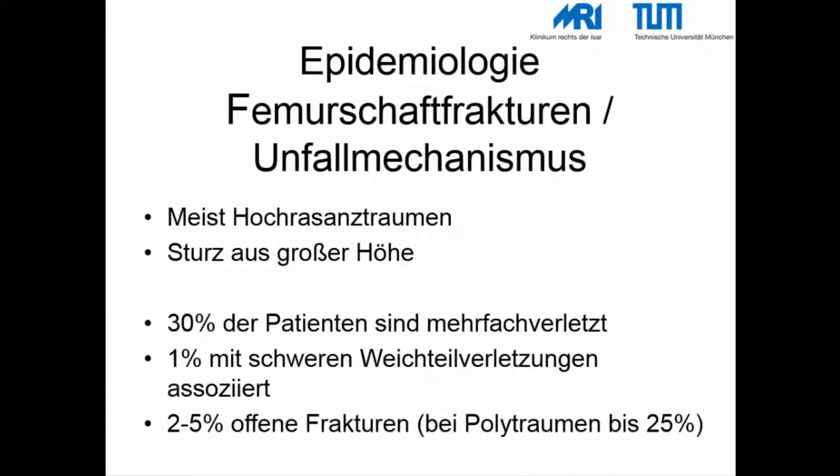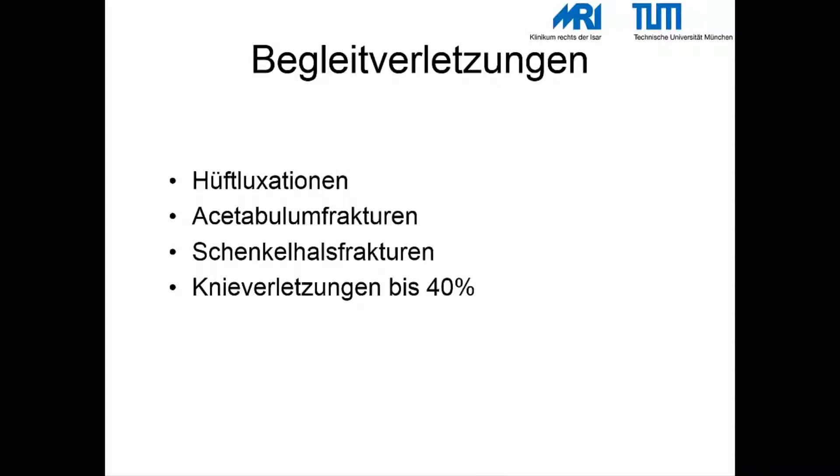Femurschaftfrakturen treten meistens nach Hochenergietraumata, beispielsweise Sturz aus großer Höhe, auf. 30% der Patienten sind mehrfach verletzt, 1% mit schweren Weichteilverletzungen assoziiert. Bei 2–5% treten offene Frakturen auf, bei polytraumatisierten Patienten bis zu 25%. Häufige Begleitverletzungen sind Hüftluxation, Acetabulumfrakturen, Schenkelhalsfrakturen oder Kniegelenksverletzungen.